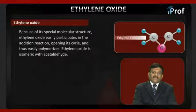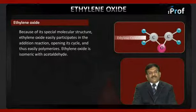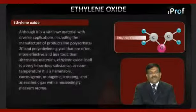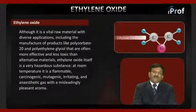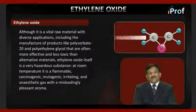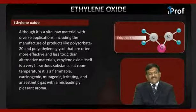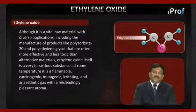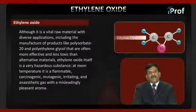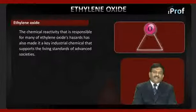Because of its special molecular structure, ethylene oxide easily participates in addition reactions by opening its cycle, and thus easily polymerizes. Ethylene oxide is isomeric with acetaldehyde. Ethylene oxide itself is a very hazardous substance; at room temperature it is a flammable, carcinogenic, mutagenic, irritating, and anaesthetic gas with a misleading pleasant aroma.